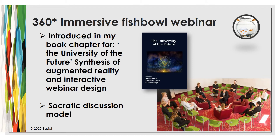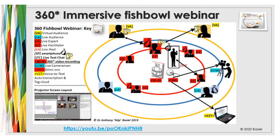In a Socratic discussion, instead of sitting in rows you have an opportunity to work with experts in the middle, exchanging ideas. It's a brilliant design for brainstorming, coming up with creative solutions and innovation that might not emerge from a traditional training or lecture style. This is elaborated in a book chapter I've written in 'University for the Future.' This figure breaks down more of the technology involved with the 360 camera in the middle.